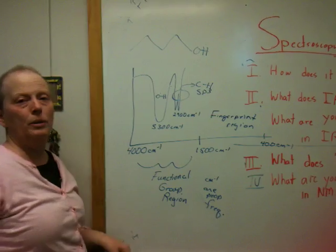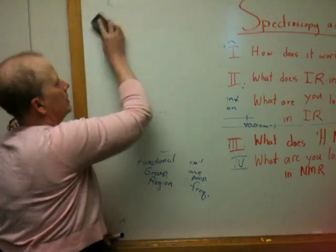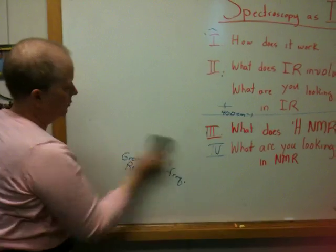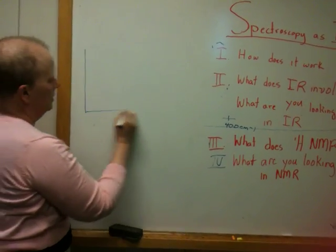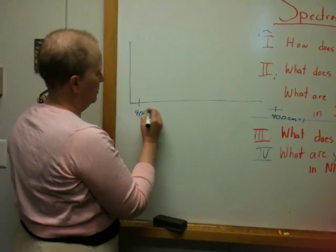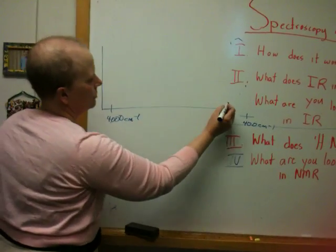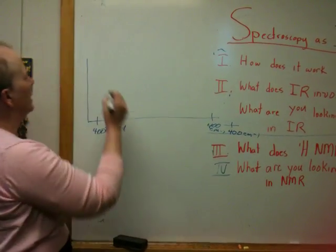Supposing we had something more complex. Where are we with time, Claude? About six and a half minutes. Okay. So we can do one more. Let's do one more functional group. Supposing we have something like this, 4,000 reciprocal centimeters down to 400 reciprocal centimeters.